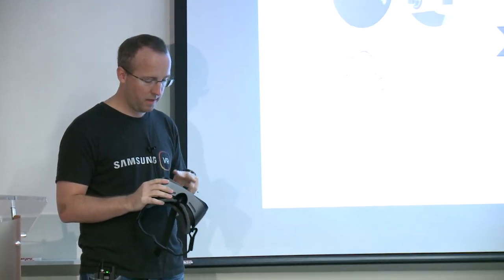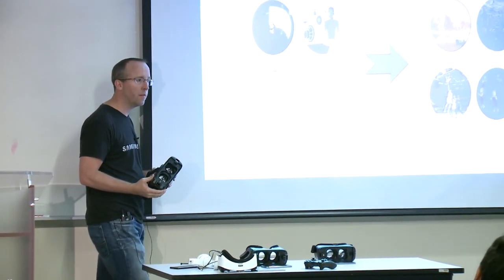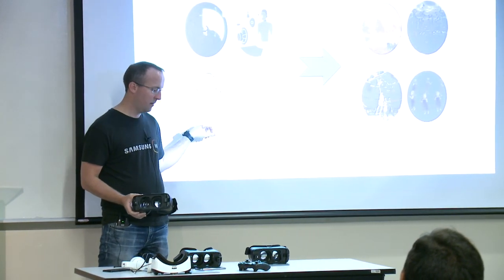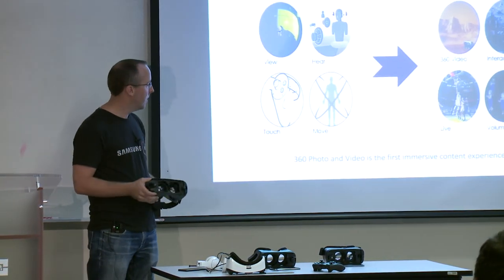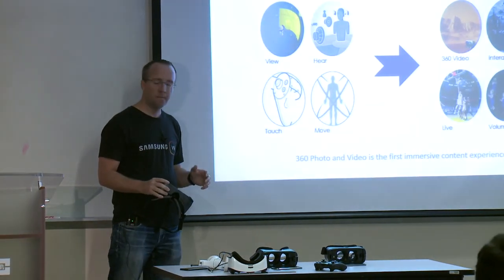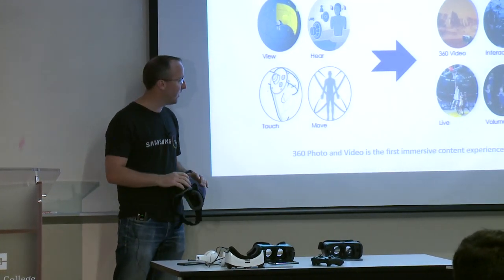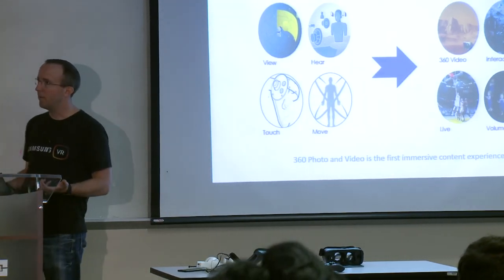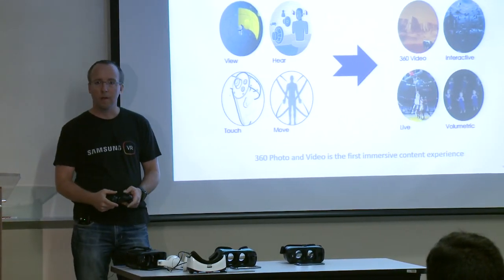Where is VR going? We think mobile is going to be the most important because there will be the most units in mobile. There will be full position tracking — it won't just be rotational. There will also be hand tracking. There are lots of different ways to track hands: cameras out here tracking your hands, cameras here tracking hands in front of you, magnetic coils that can track where your hands are, and gloves that can track your hands and fingers.